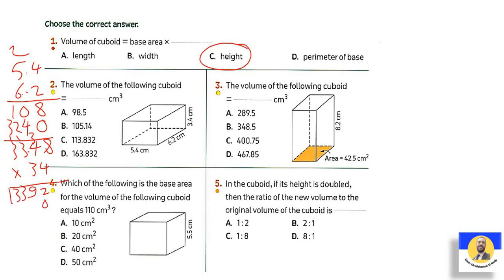Continuing the multiplication of 33.48 by 34: 4×8=32 carry 3; 4×4=16+3=19 carry 1; 4×3=12+1=13 carry 1; 4×3=12+1=13. Put 0. Then 3×8=24 carry 2; 3×4=12+2=14 carry 1; 3×3=9+1=10 carry 1; 3×3=9+1=10. Make addition: 2, 9+4=13 carry 1, 8, 3+1+1. Place decimal point after 3 places. Answer: 113.832.